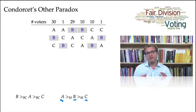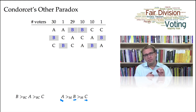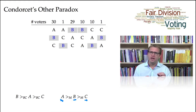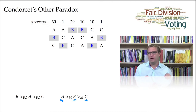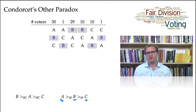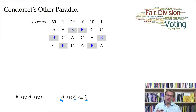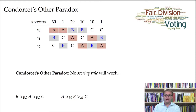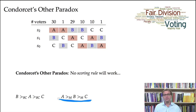You might say the reason for that is because of the particular scores that Borda is using — maybe Borda should use a different scoring mechanism. So give more points to the winner: rather than just two points, maybe you should give five points to the winner, only one point to the candidate that comes in second, and zero points to the candidate that comes in last. What Condorcet's other paradox shows is that in fact no scoring rule will work — that is, no scoring rule will ever give you the ranking: candidate A first, candidate B second, candidate C third.